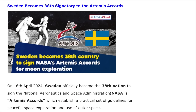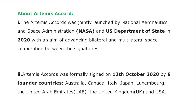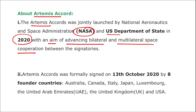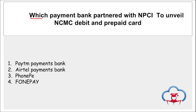On 16th April, Sweden officially became the 38th nation to sign the NASA Artemis Accord, which establishes practical guidelines for peaceful space exploration and use of outer space. Switzerland was the 37th. The Artemis Accord was jointly launched by NASA and the US Department of State in 2020, with the aim of advancing bilateral and multilateral space cooperation, and was formally signed on 13th October 2020 by eight countries.